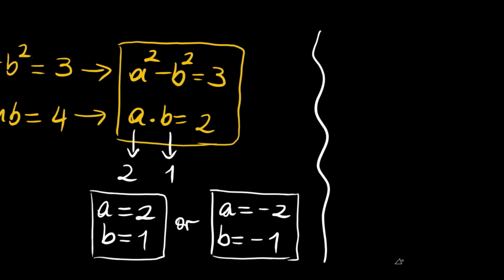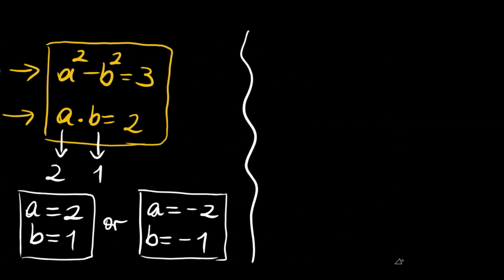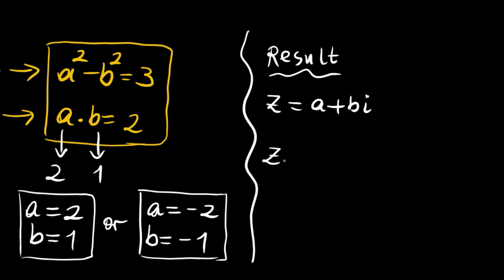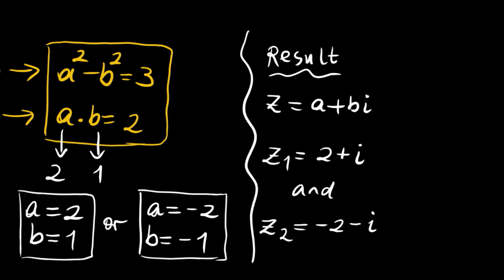The set of solutions gives us the results. z equals a plus bi, so the first root z₁ equals 2 plus i, and z₂ equals negative 2 minus i. These are the two square roots of 3 plus 4i using the first method.